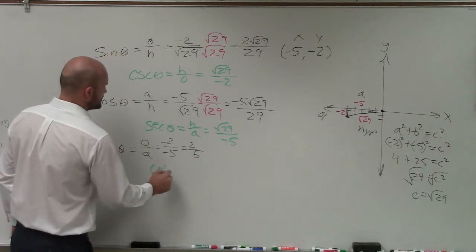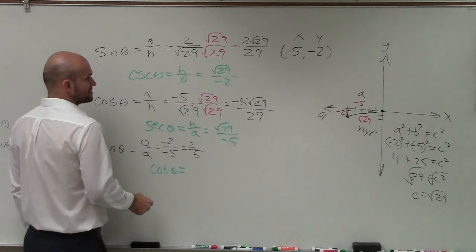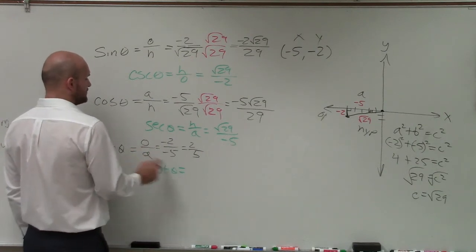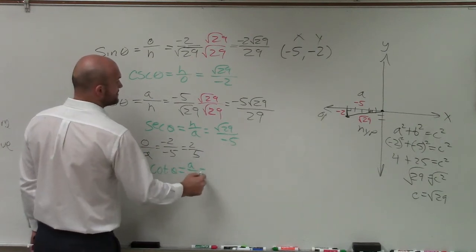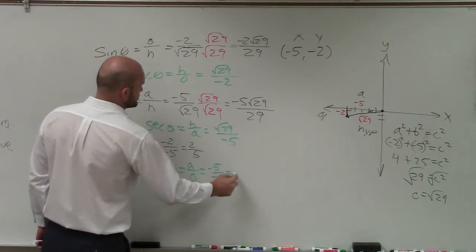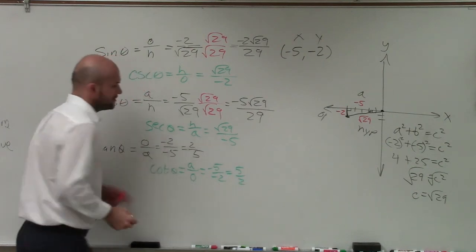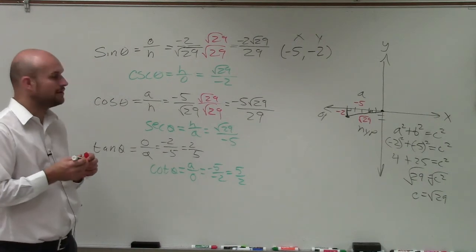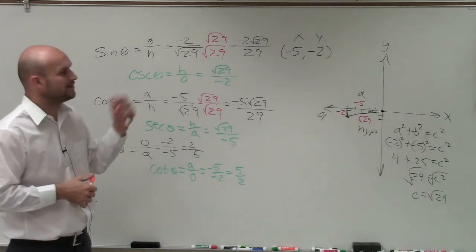And then I have the cotangent of theta, which is equal to opposite over adjacent. So now it's going to be adjacent over opposite, which is going to be negative 5 over negative 2, which should be 5 halves. So there you go, ladies and gentlemen. That is how you evaluate now all six trigonometric functions when given a point.